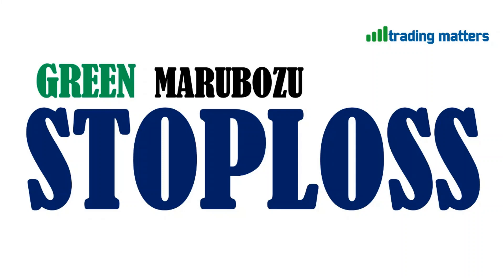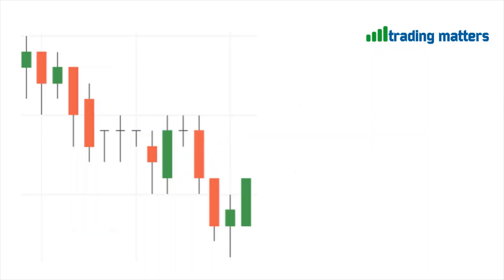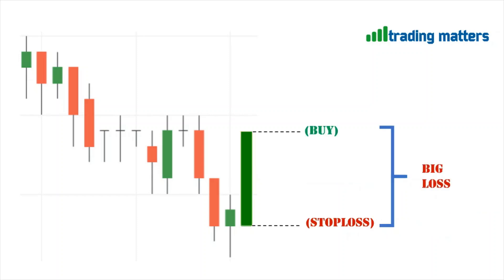Green Marubozu stop loss: place the stop loss around the green Marubozu candle's low. The bottom of the Marubozu is considered the low, and that is where we set the stop loss. Since we are buying at the closing price, our loss equals the difference between the buy price and the stop loss. This is why we do not trade lengthy Marubozu candles — the difference between buy and stop loss would be too large, leading to a big loss.